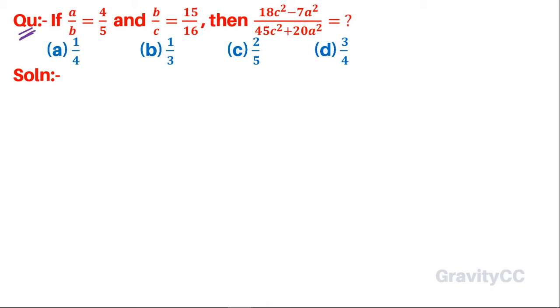Question: If a/b = 4/5 and b/c = 15/16, then (18c² - 7a²)/(45c² + 20a²) = ? Solution: a/b